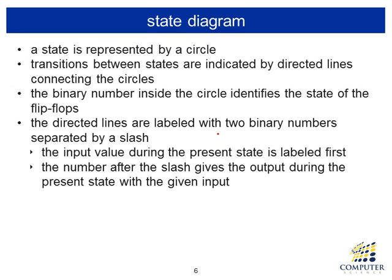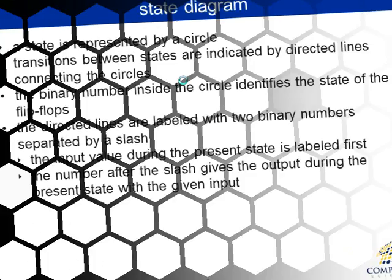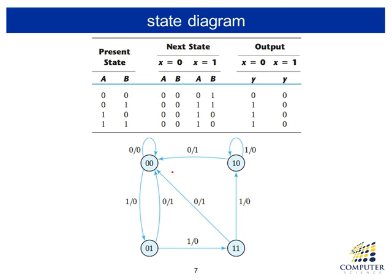A state diagram is a graphical representation of the state table. The state diagram and state table both contain exactly the same information — the state table is in tabular form while the state diagram is graphical. The convention is: use a circle to represent a state, use arrows to represent transitions between states, and each arrow has a label. Inside the circle you give the name of the state. Let me explain this using an example — this is an example of a state diagram from which you can construct a state table.